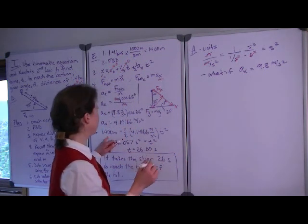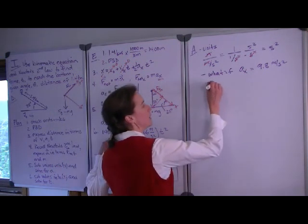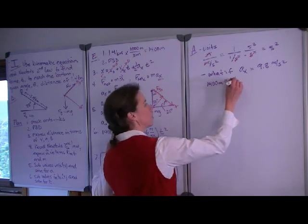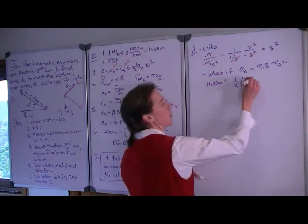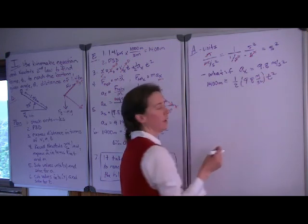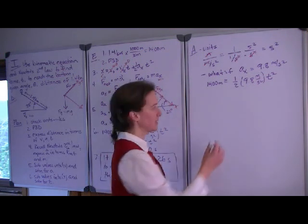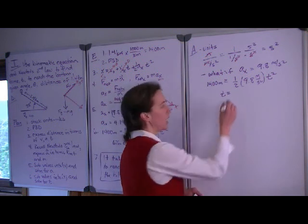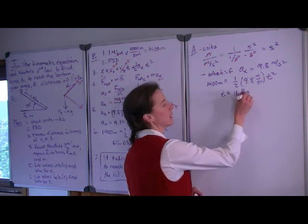So in that case, we would have that 1,400 meters is equal to one half times 9.8 meters per second squared times time squared. And I'll skip the intermediate step. You can do that on the calculator. You end up with the time of 16.9 seconds.